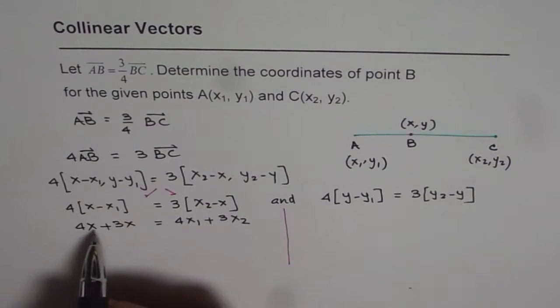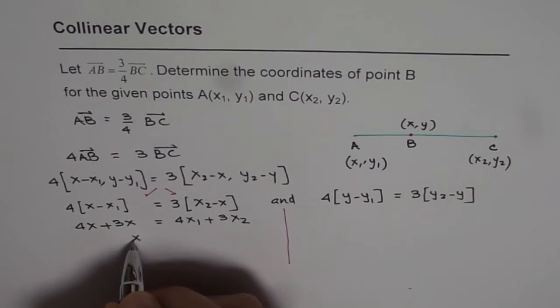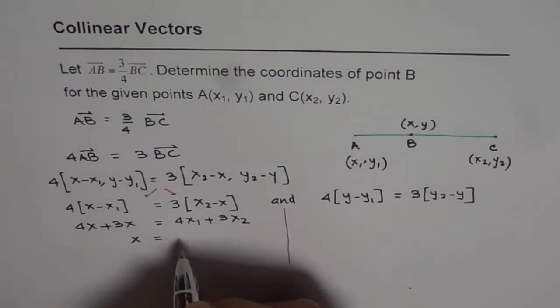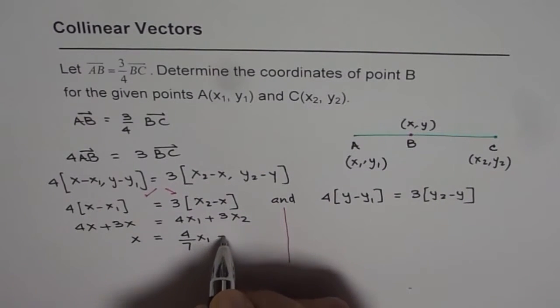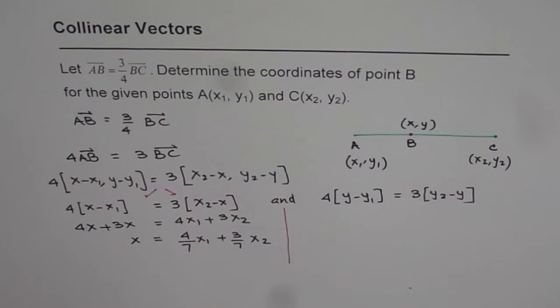Now 4x plus 3x is 7x, so we can write x equals 4 over 7 times x₁ plus 3 over 7 times x₂. That is how we get the x coordinate.